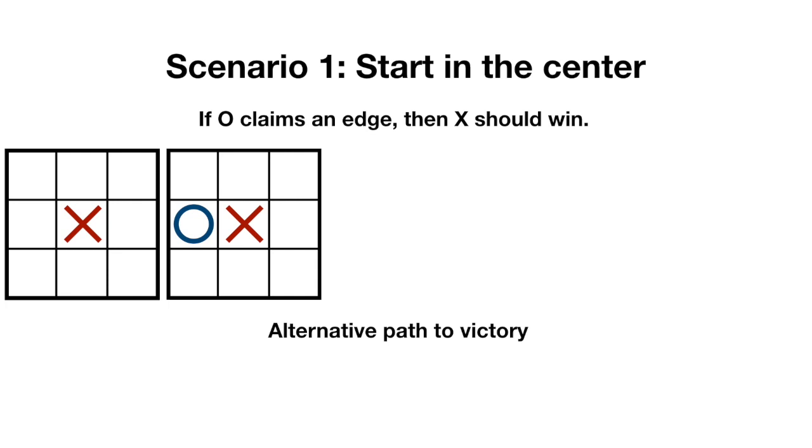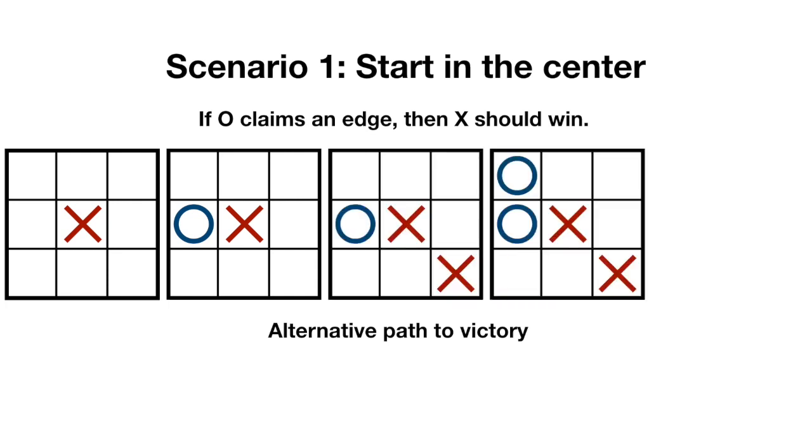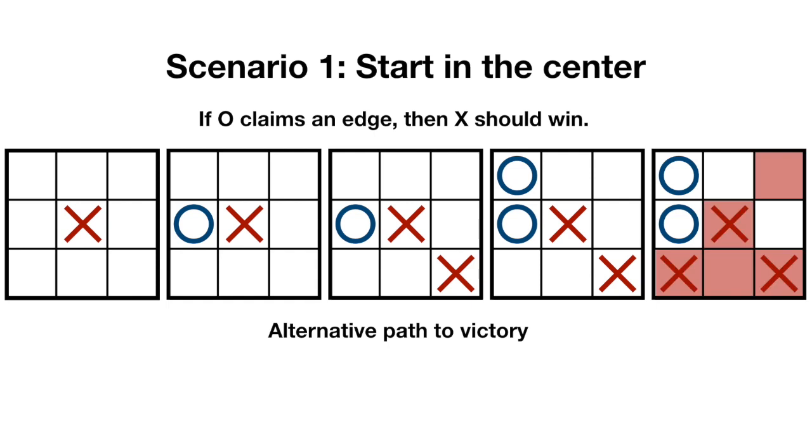Alternatively, x could have played in the far corner. O would still be forced to block, then once again x can create a double threat with a guaranteed win. There might be multiple ways to victory, but I'm just going to highlight one from now on.